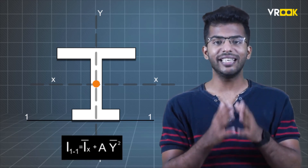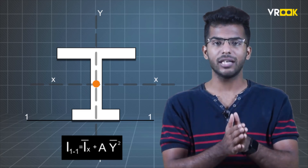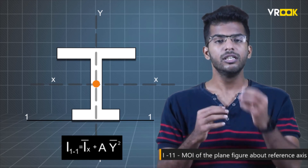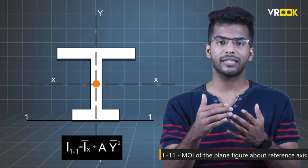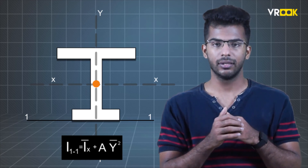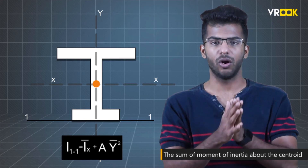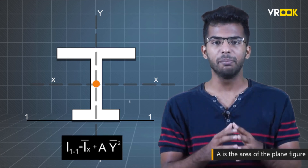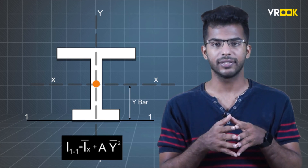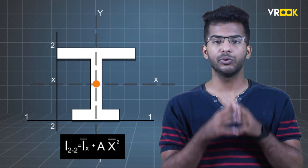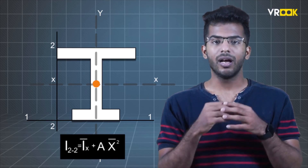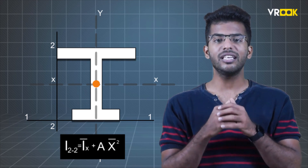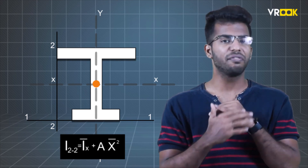Based on these two axes, we have two theorems giving two sets of equations. From the Parallel Axis Theorem: I₁₁ = Ī_x + A·Ȳ², where I₁₁ is the moment of inertia about the reference axis parallel to the centroidal axis, Ī_x is the moment of inertia about the centroid, A is the area of the plane figure, and Ȳ is the distance between the centroidal axis and the reference axis. Similarly, I₂₂ = Ī_y + A·X̄², where I₂₂ is about the reference axis parallel to the centroidal yy axis. Using these two equations, we can calculate the moment of inertia of different complex shapes.